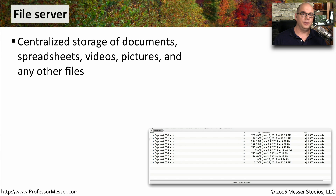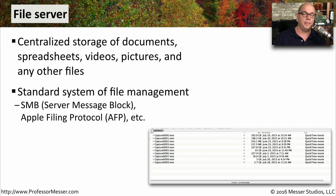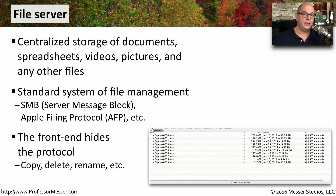Another well-known service is a file server. This is where we might store all of our user documents, videos, pictures, and anything else we want to save out on the network drive. This uses a very standardized form of file management. The protocols you'll often see communicating to and from a file server include server message block, or SMB, for Windows, and Apple filing protocol, or AFP, for Apple servers. From our perspective, we never see these protocols — we see a front end where we can move, rename, and copy files, while the protocol communicates behind the scenes to facilitate all file system changes.